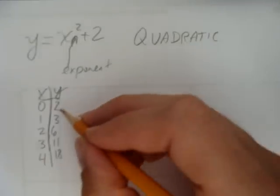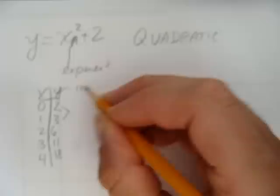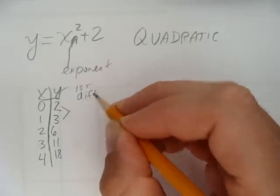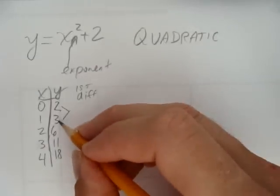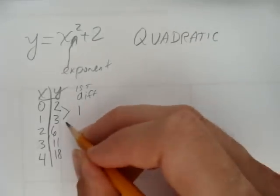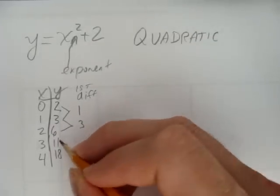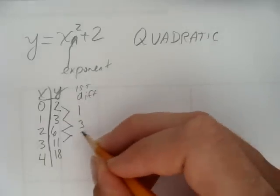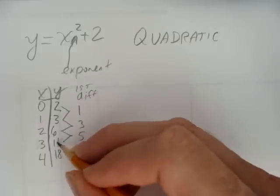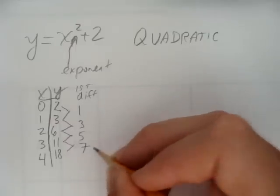At first it doesn't look like there's much of a pattern, but then when you check the first differences, you start to see that there is. 3 take away 2 is 1. 6 take away 3 is 3. 11 take away 6 is 5. And 18 take away 11 gives 7.